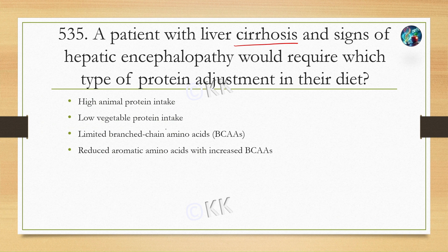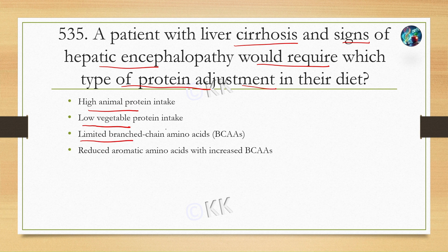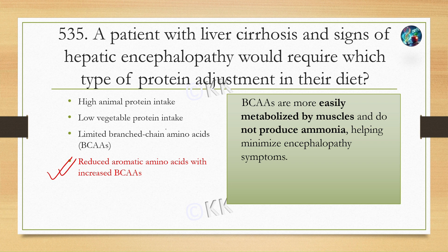A patient with liver cirrhosis and signs of hepatic encephalopathy would require which type of protein adjustment in their diet? Option A: high animal protein intake, Option B: low vegetable protein intake, Option C: limited branched-chain amino acids, Option D: reduced aromatic amino acids with increased branched-chain amino acids. The correct answer is Option D. Branched-chain amino acids are more easily metabolized by muscle and do not produce ammonia, thus helping minimize encephalopathy symptoms.